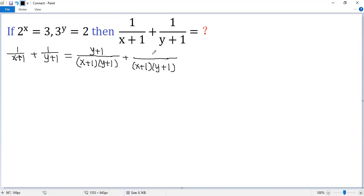The top of the second would be x plus 1. Now we can combine them. So we get x plus 1 times y plus 1. The top, x plus y plus 1 plus 1, so x plus y plus 2.